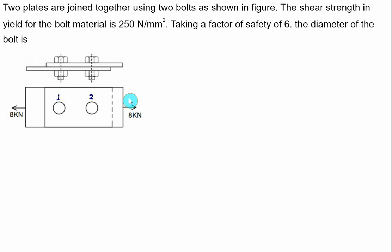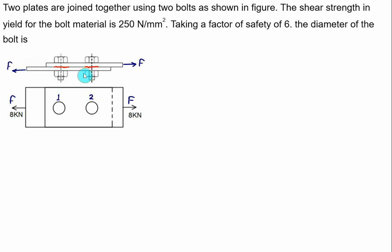The given force F is acting on the top plate and an equal force F acts on the bottom plate. Because of these two forces, the bolt will fail by shear on the circular cross section.